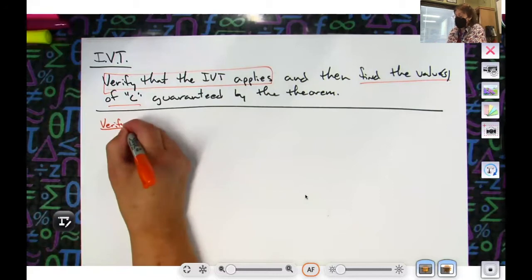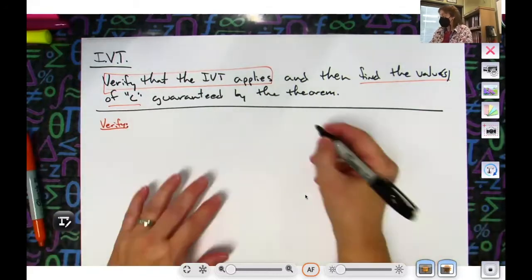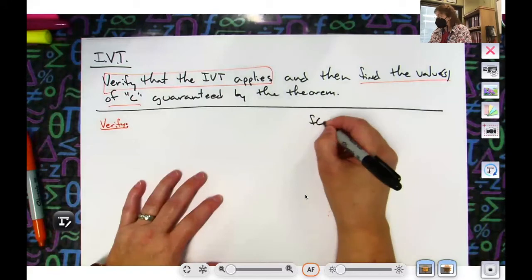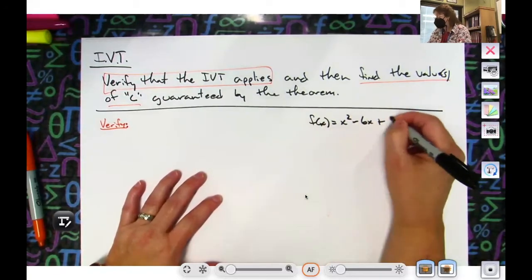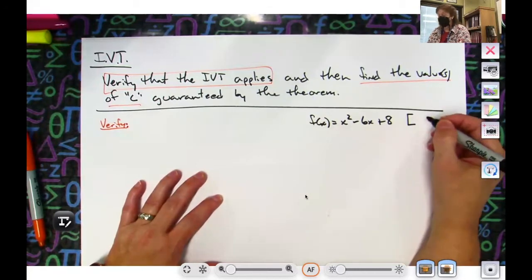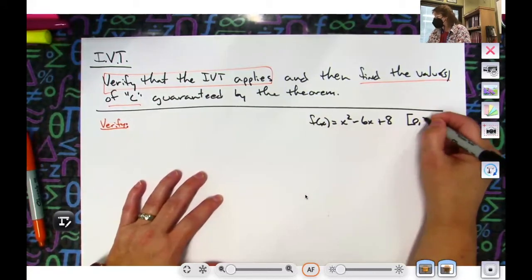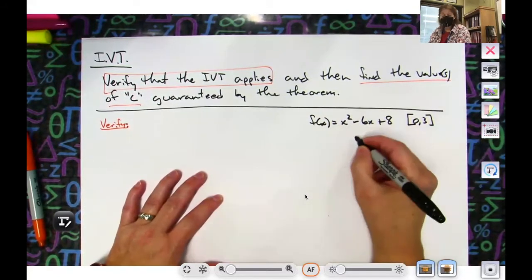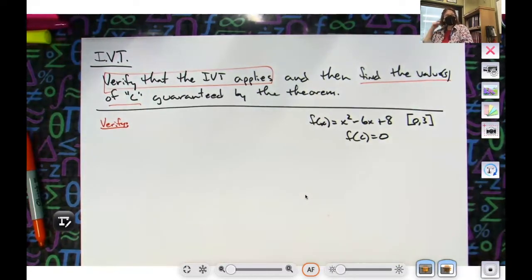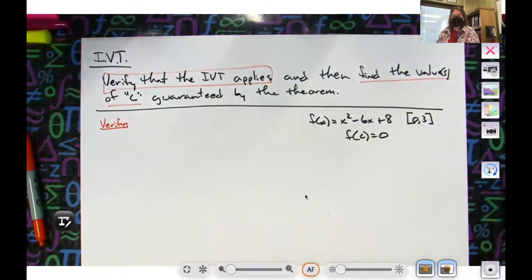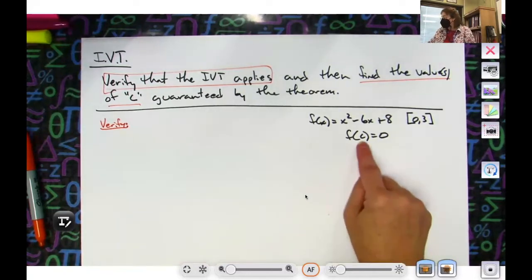Now if I'm going to do the verify part, I'm going to do that first. Let's go ahead and set the problem up. Let's say they give me f(x) equals x squared minus 6x plus 8, and let's say they're looking at it on the interval from zero to three, and let's say that they tell you f(C) equals zero.